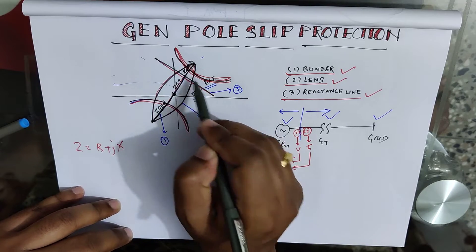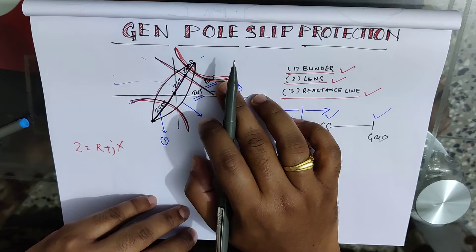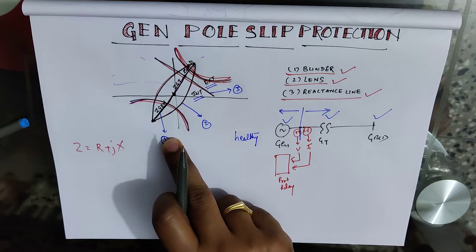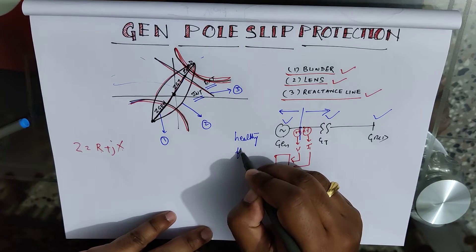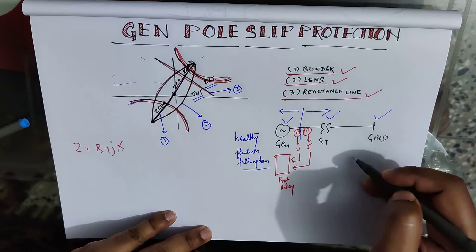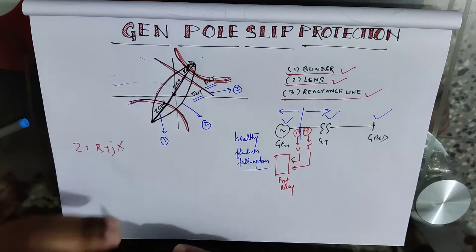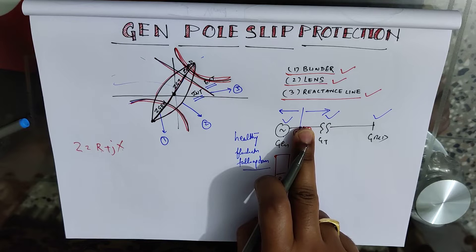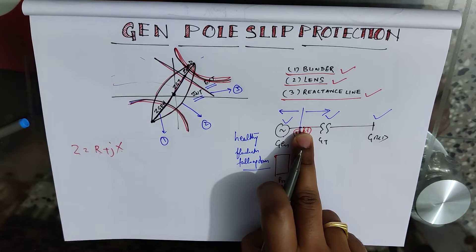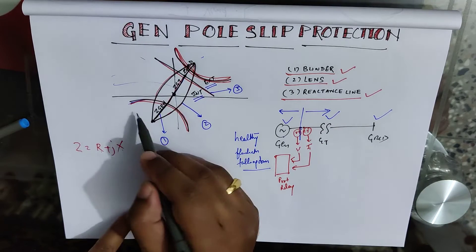The basic difference between internal and external swing: in an external swing, the generator terminal voltage remains healthy. But in an internal swing, the generator terminal voltage starts fluctuating or falling down. This happens because whenever there is a line fault or a heavy fault inside the power station, the excitation system — whose duty is to maintain voltage at the generator terminals — may not be capable of maintaining voltage due to heavy fault current.